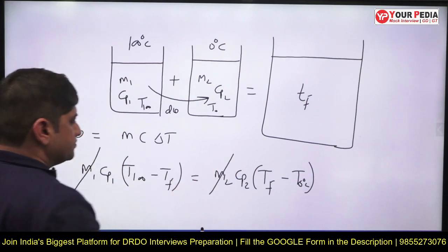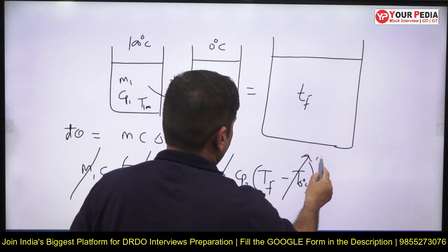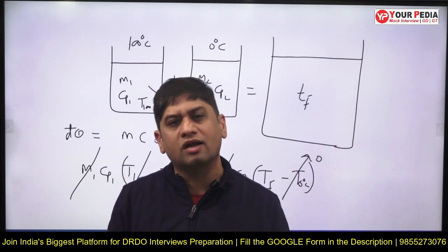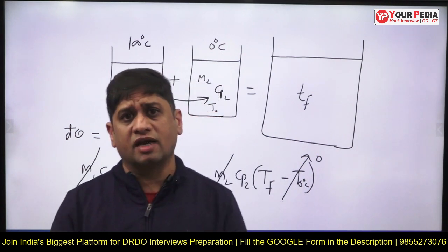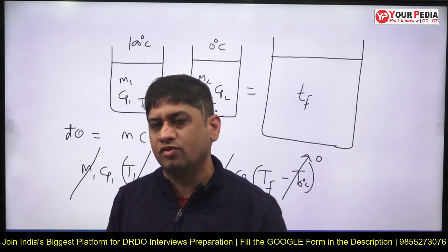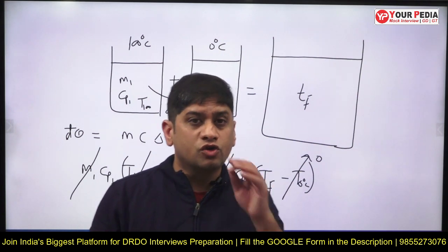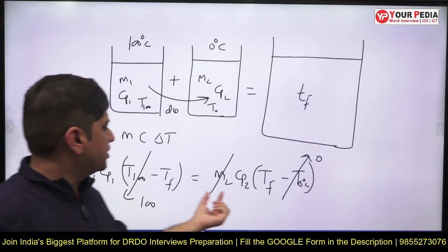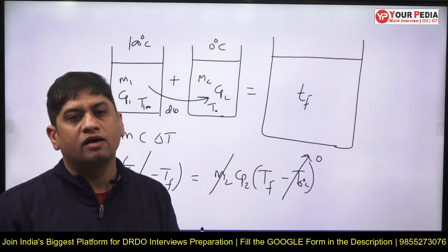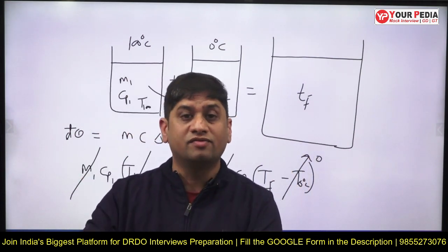Now, do you think cp1 and cp2 are the same? The assumption for getting 50°C is that the specific heat of water (boiling) and the specific heat of ice (freezing) are the same — but actually they are not. The specific heat of water is 4.18 kJ/kg·K, and for ice it is approximately 2. So you need to say: sir, I need the specific heat of water and of ice, and then I'll calculate the correct final temperature. This is the approach the interviewer expects.